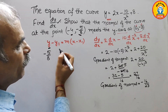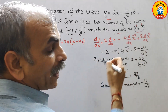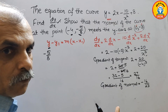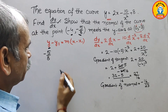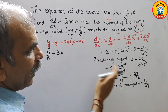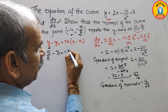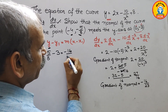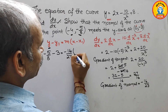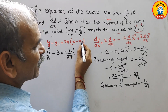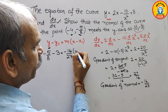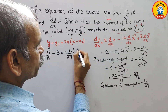Here, y₁ is minus 3. M is minus 16 by 27. And here comes x minus x₁. Since x₁ is 0, here we will get x equal to minus 4.